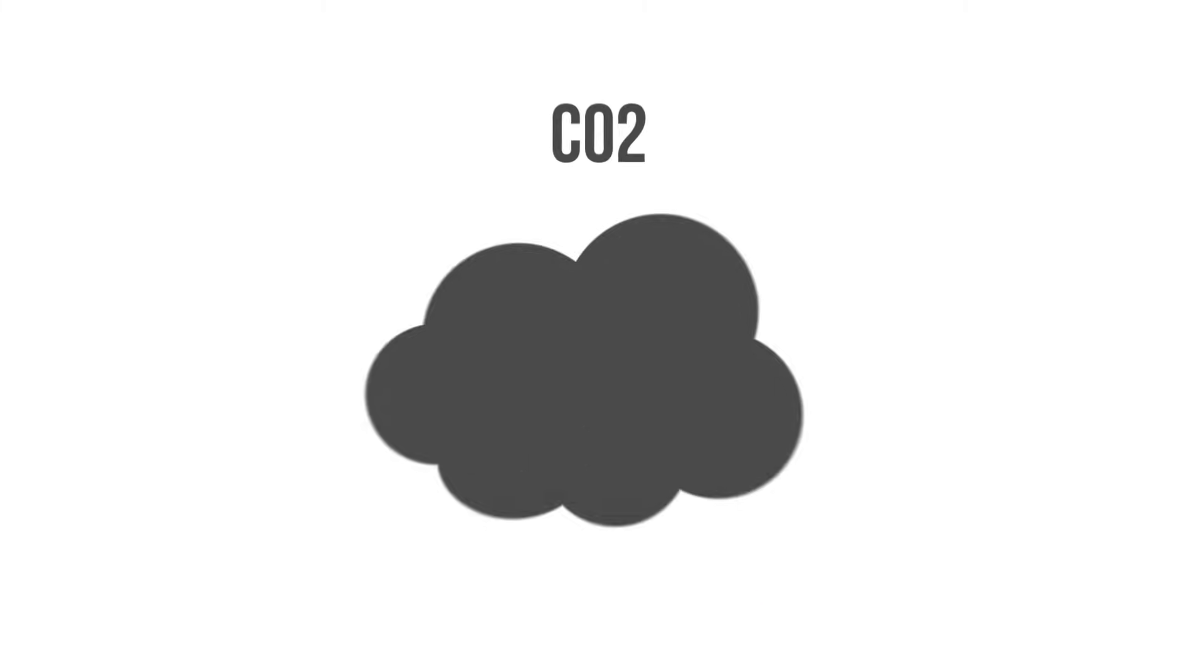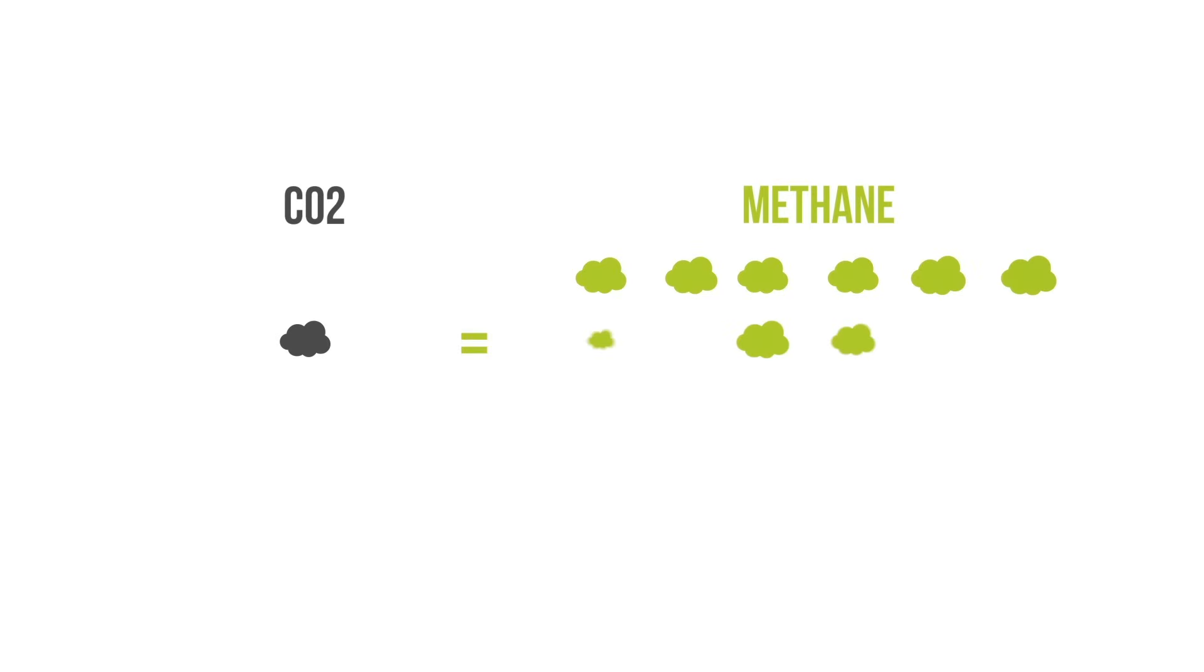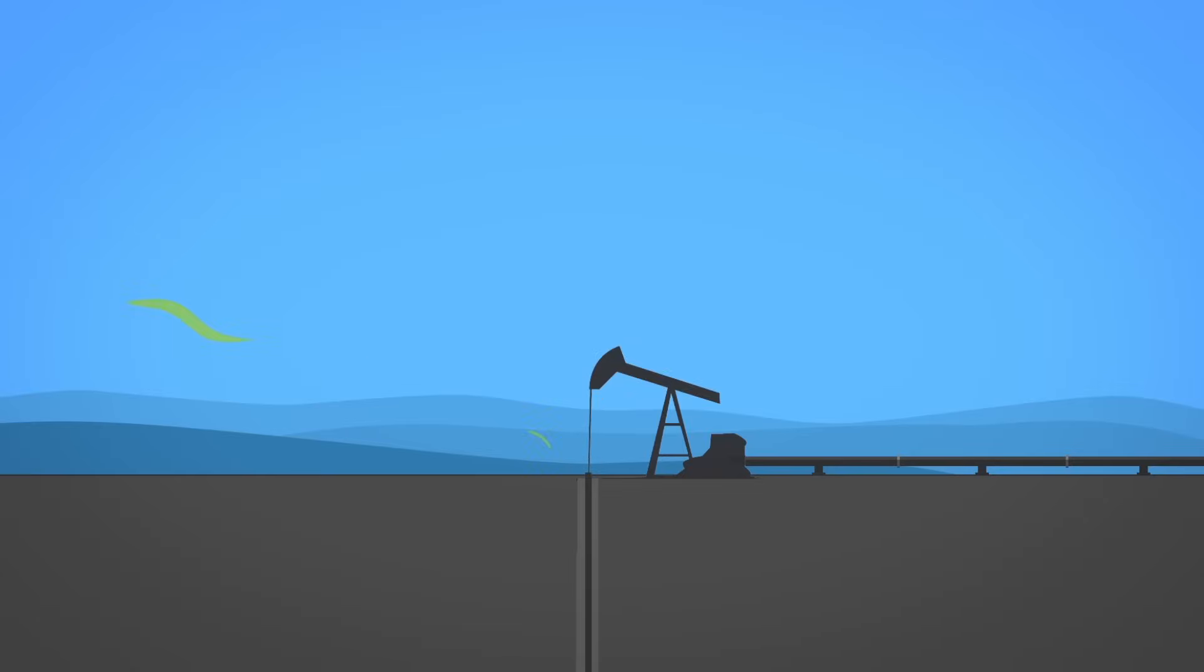Despite fewer emissions, natural gas is still a source of CO2. In addition, methane is a potent greenhouse gas itself, having nearly 24 times the impact of CO2. During the extraction and transportation process, natural gas can escape into the atmosphere and contribute to climate change.